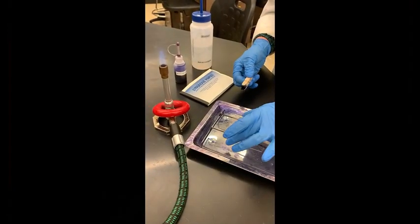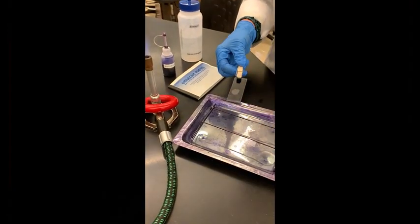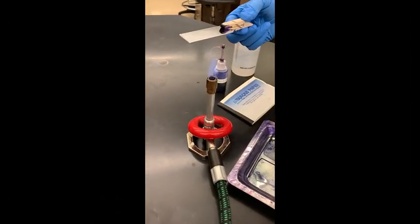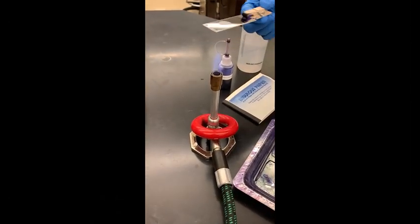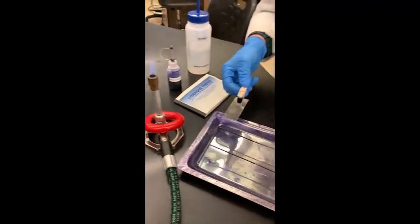Next, you're going to heat fix that smear by passing the underside of the slide through a Bunsen burner flame a few times. This is the step that really takes some practice.